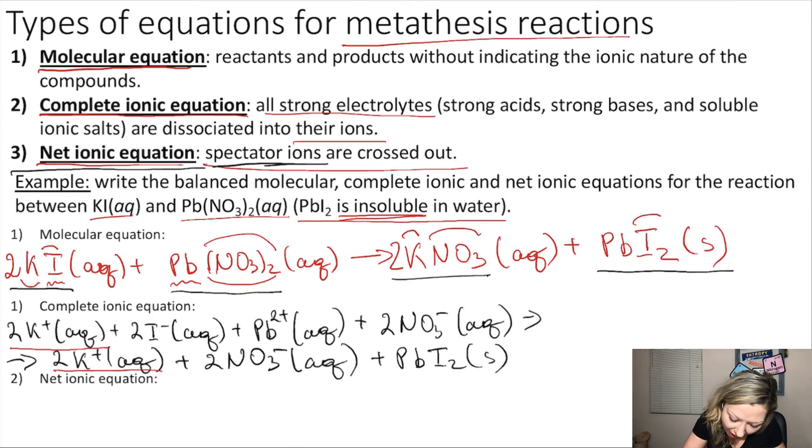Are there any other ions that have the same thing going on? The nitrate ions, right? They are the same on the reactant and on the product side. So what I need to do in my net ionic equation, I have to cross those out.